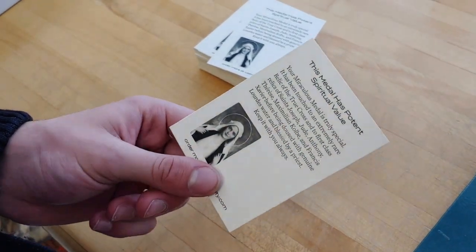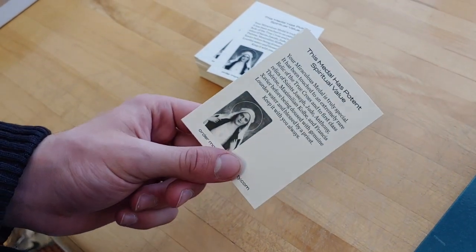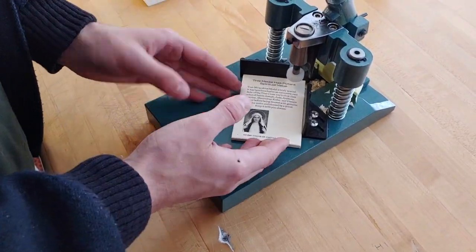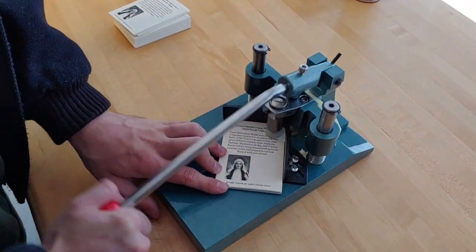Next, fresh prayer cards arrive from the printer. With a device called a corner rounder cutter, a technician carefully cuts the cards to round the corners.